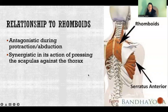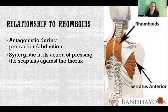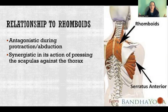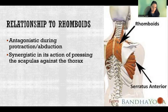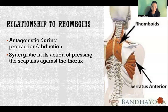Serratus anterior's relationship to the rhomboids is a little complicated, but simply put, the two muscles are antagonistic in terms of protraction and abduction. Serratus anterior wants to abduct and protract, while the rhomboids do the exact opposite — retraction and adduction. So they work opposite each other in that action, but they work together in the action of stabilizing the scapula against the thorax. Serratus anterior is pulling down on that medial border, anchoring the scapula to the rib cage, and the rhomboids work together with serratus anterior to contribute to that anchoring action.